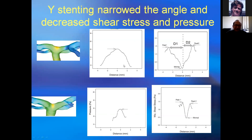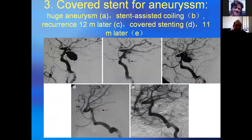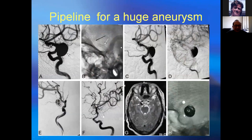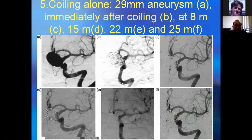A covered stent can be placed across the aneurysm neck to prevent blood flow from getting inside the aneurysm. A dense stent — also called a blood vessel reconstruction stent — reduces the blood flow entering the aneurysm after placement. For a large aneurysm, placing a pipeline device causes the aneurysm to gradually disappear. A large aneurysm treated with coiling alone, without stent, can also be shown here.